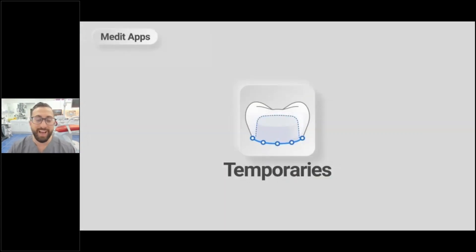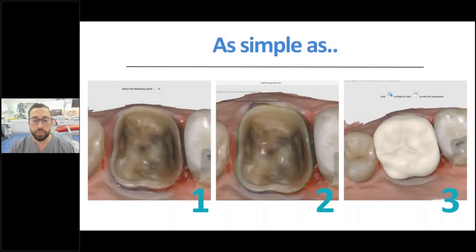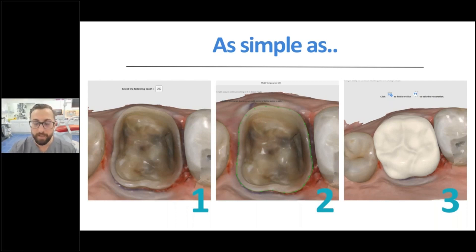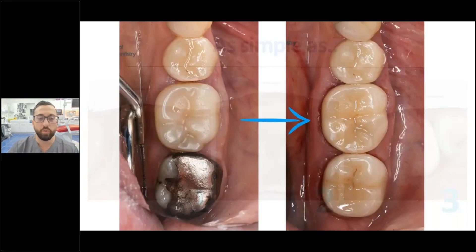Temporaries was a popular app, and I felt like it was the company testing the waters before developing their Clinic CAD app. Medit Temporary was released and initially required a pre-op scan, then they developed their own library, then added AI. Now you can make a Medit temporary crown in just a couple of clicks — you import your scan, delineate your margin line just like Exocad or Cerec, and the AI with a tooth library creates the temporary crown for you.